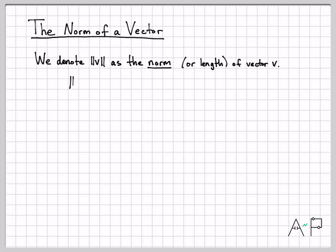It's defined in terms of the dot product. The norm of vector v is defined as the square root of v dot v. So take v and dot it with itself. That gives us a scalar, and then we take the square root of that scalar to get the norm of the vector, which is really just the length.